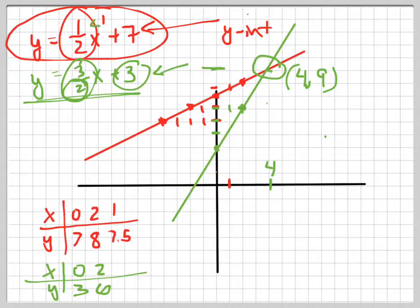Let's plug in 4 for x. What's half of 4? 2 plus 7 is 9. So it works in that equation. Now let's plug it into the other equation. 4. Half of 4 is 2. 2 times 3 is 6. Plus 3 is 9. 4, 9 is the intersection point.